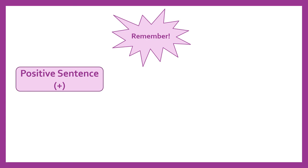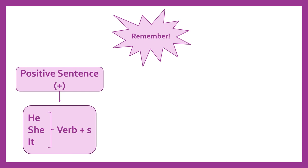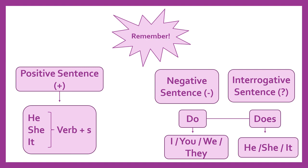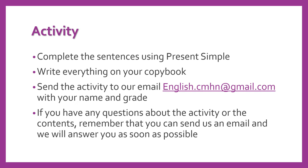So remember, and very important: in the positive sentence, we add an S to the verb when we have the pronoun he, she, or it — only in the positive sentence. En la oración positiva, si tenemos el pronombre he, she, o it, siempre le vamos a agregar una S al verbo, solo en la oración positiva. In the negative and interrogative sentence, we use auxiliaries do or does, and remember that each auxiliary is used with different pronouns. En la oración interrogativa y en la negativa vamos a utilizar auxiliares; ambos auxiliares son para diferentes pronombres.